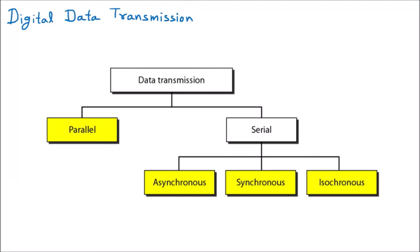Today we are discussing digital data transmission. In the last class we discussed that there are two types of data transmission: analog and digital. For analog, we have sine waves, and for digital the waves are simply high and low, representing 1s and 0s. Digital is always better than analog signals. Now we are extending this topic — digital data transmission is further divided into two categories.